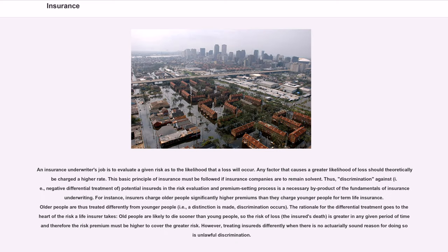An insurance underwriter's job is to evaluate a given risk as to the likelihood that a loss will occur. Any factor that causes a greater likelihood of loss should theoretically be charged a higher rate. This basic principle of insurance must be followed if insurance companies are to remain solvent. Thus, discrimination against potential insureds — i.e., negative differential treatment of them — in the risk evaluation and premium setting process is a necessary byproduct of the fundamentals of insurance underwriting. For instance, insurers charge older people significantly higher premiums than they charge younger people for term life insurance. The rationale for the differential treatment goes to the heart of the risk a life insurer takes: older people are likely to die sooner than young people, so the risk of loss is greater in any given period of time and therefore the risk premium must be higher. However, treating insureds differently when there is no actuarially sound reason for doing so is unlawful discrimination.